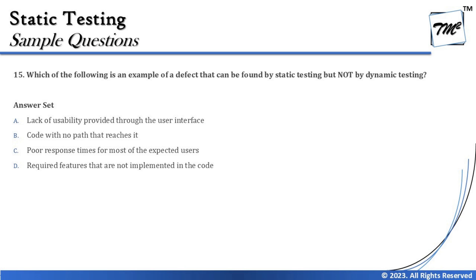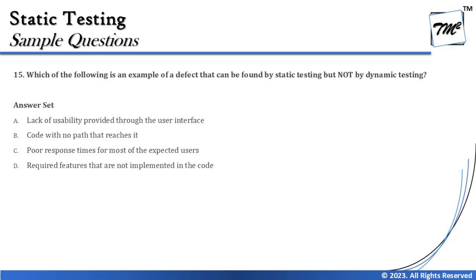Let's cross-check with option C and D. Option C says 'poor response time for most expected users.' Poor response time is directly related to performance testing, and performance testing is a level of testing that is dynamically conducted, not reviewed. Code review can contribute to performance testing, but performance testing itself is a dynamic test level, so this defect is related to dynamic testing.